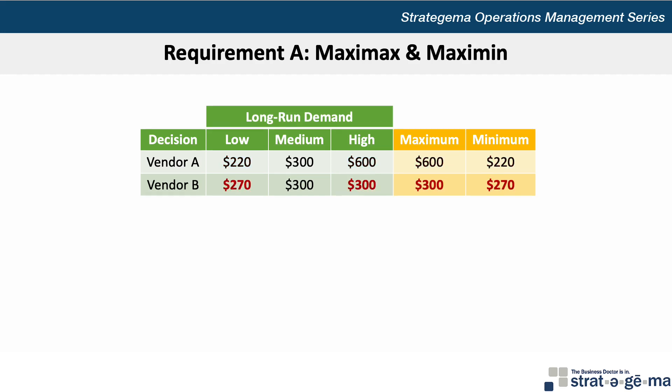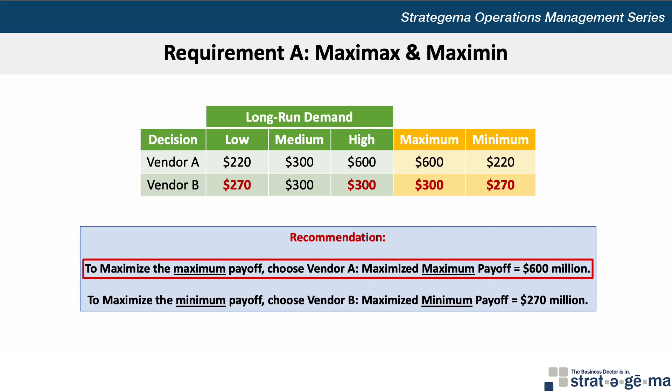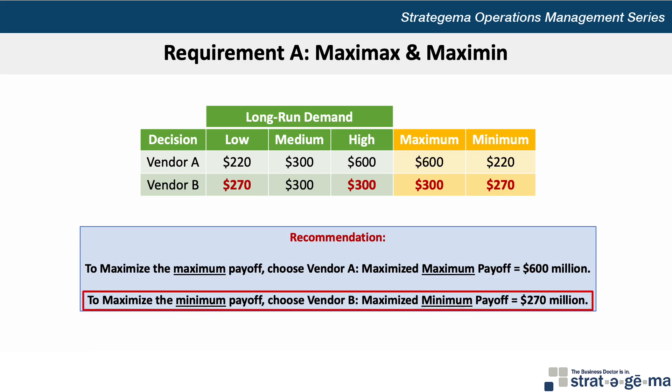For vendor B, we can see that the minimum payoff is $270 million if long-run demand is low, and the maximum payoff is $300 million if the long-run demand is high. Therefore, our recommendation would be to select vendor A if we want to maximize the maximum payoff and yield up to $600 million in profits. Alternatively, if management is more risk-averse, then they should select vendor B to maximize the minimum payoff of $270 million.